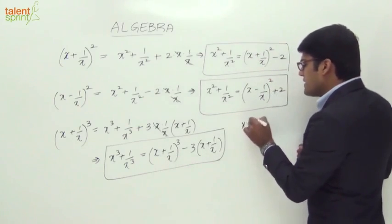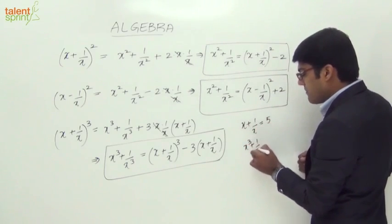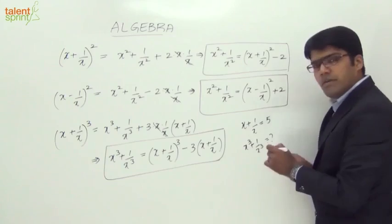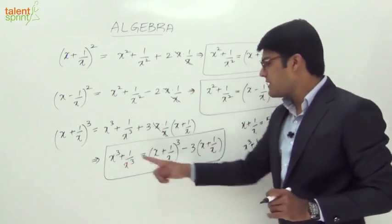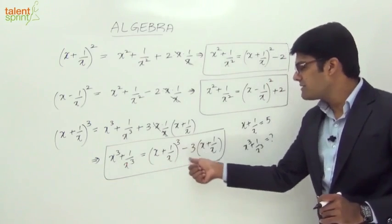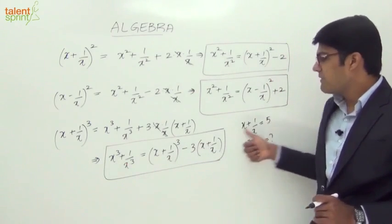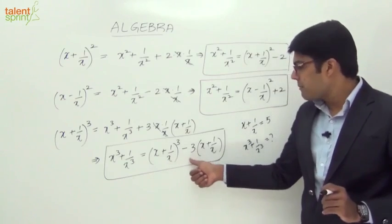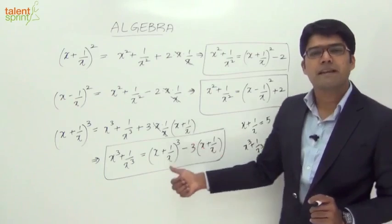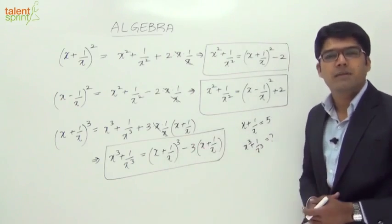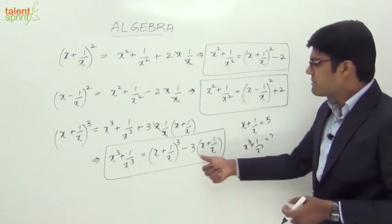Let's take a simple example: if x + 1/x = 5, find x³ + 1/x³. We need not do the whole expansion — just use the identity. x³ + 1/x³ = (x + 1/x)³ - 3(x + 1/x) = 5³ - 3×5 = 125 - 15 = 110. That's how we can directly arrive at the answer just by remembering these identities.